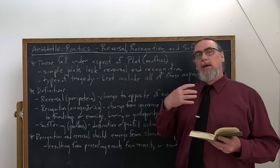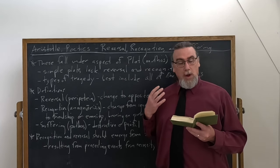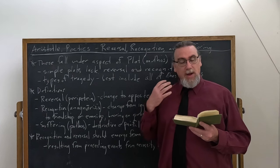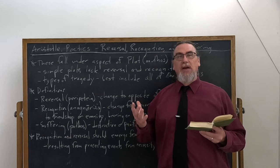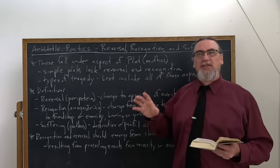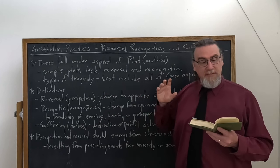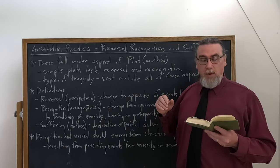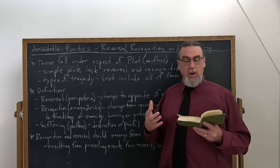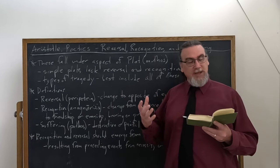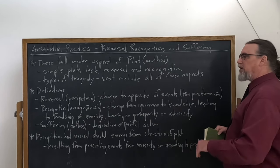So somebody is doing something to somebody or fate is doing something to somebody. And it is destructive, phthartike, meaning corrupting, damaging, or odenera, painful. And he gives you some examples of these public deaths, deaths that take place in public, literally apparent deaths, phaneros, or physical agony, or wounding, or other such things, he says.